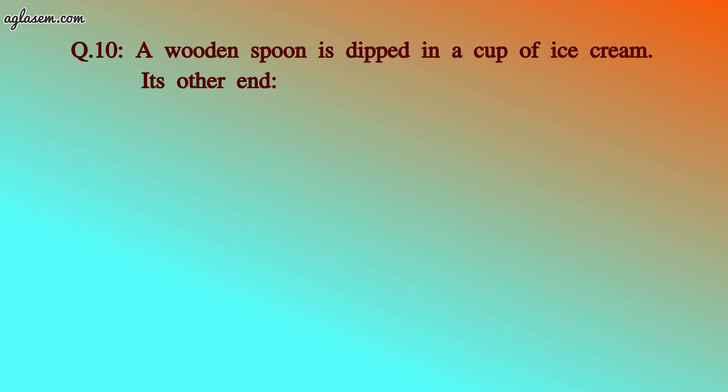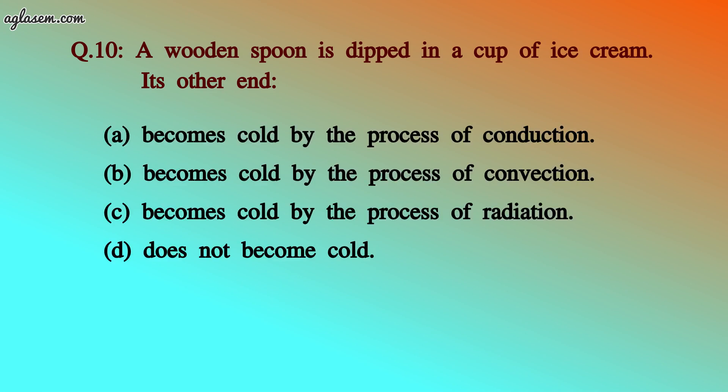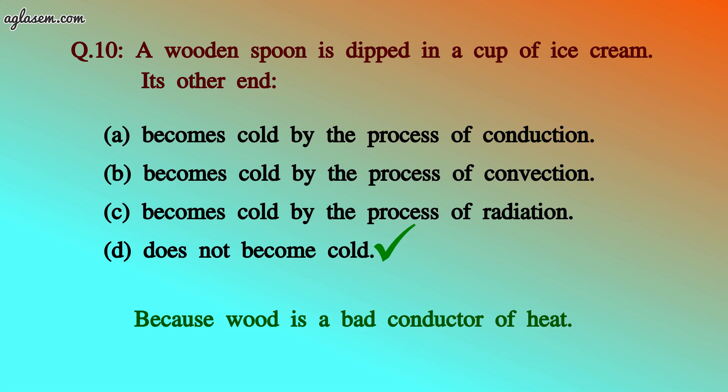Question number 10: a wooden spoon is dipped in a cup of ice cream. Will its other end: a) become cold by conduction, b) become cold by convection, c) become cold by radiation, or d) not become cold? The answer is: its other end doesn't become cold, as wood is a bad conductor of heat.